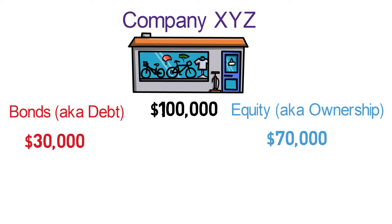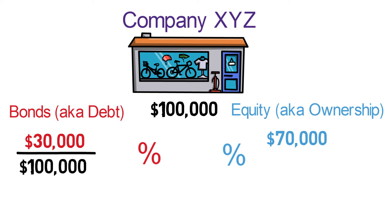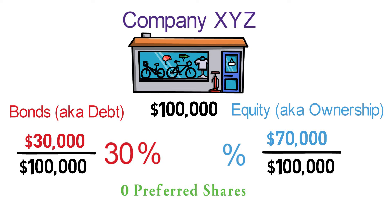So now they have $100,000 in total market value. The first question we tackle when looking to calculate WACC is: what percentage of that $100,000 is debt and what percentage is equity? The $30,000 in debt divided by the $100,000 in total market value tells us that the debt portion is 30%. And since in this case we have no preferred shares to consider, the equity portion is 70%.